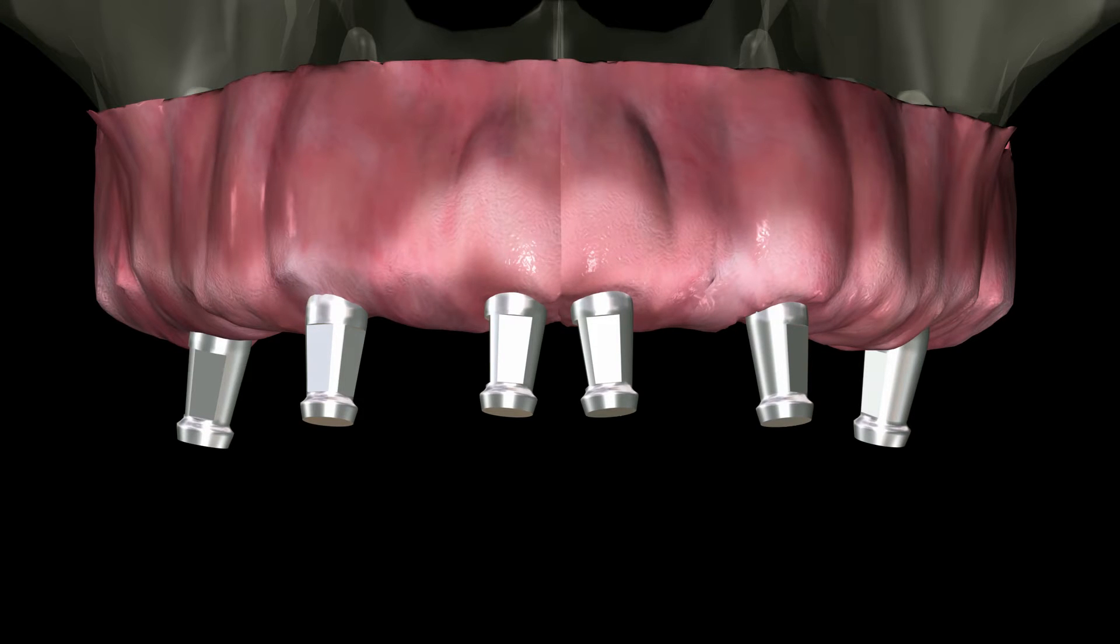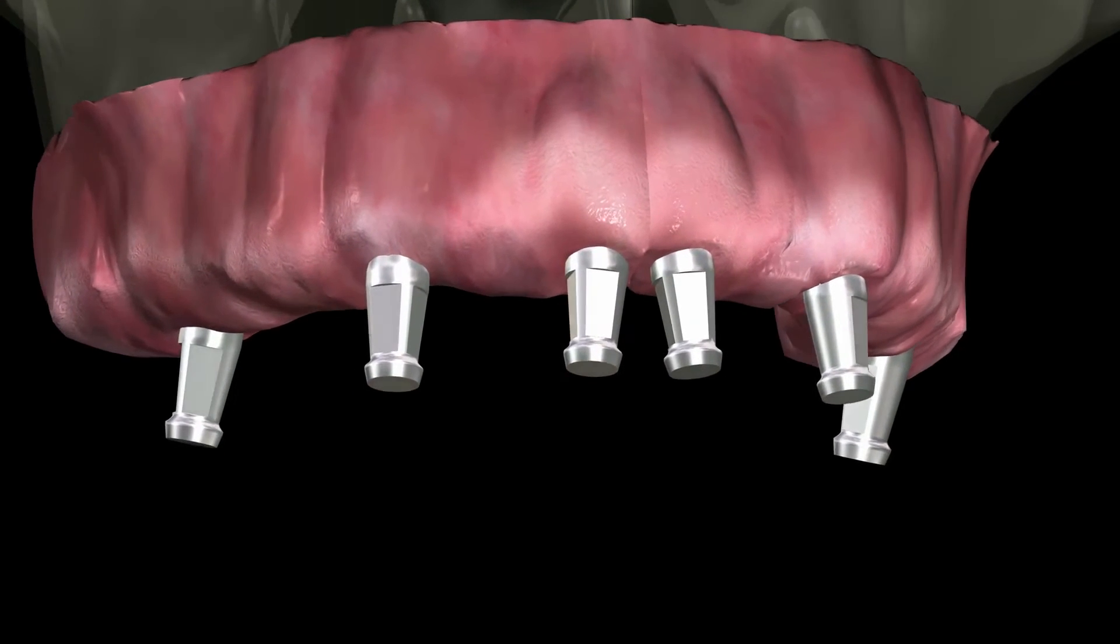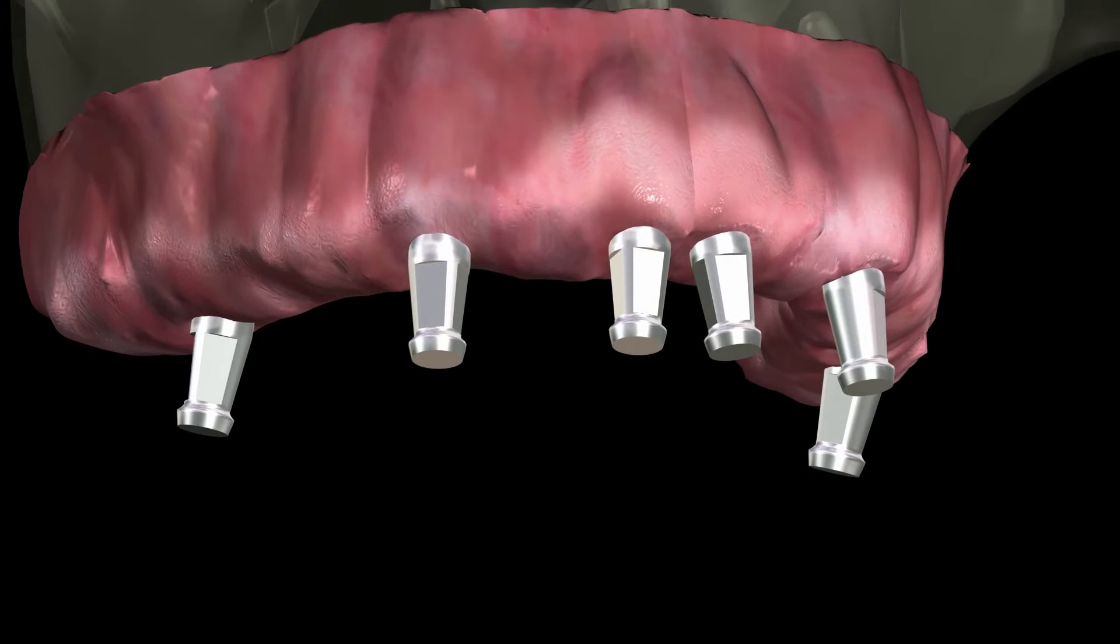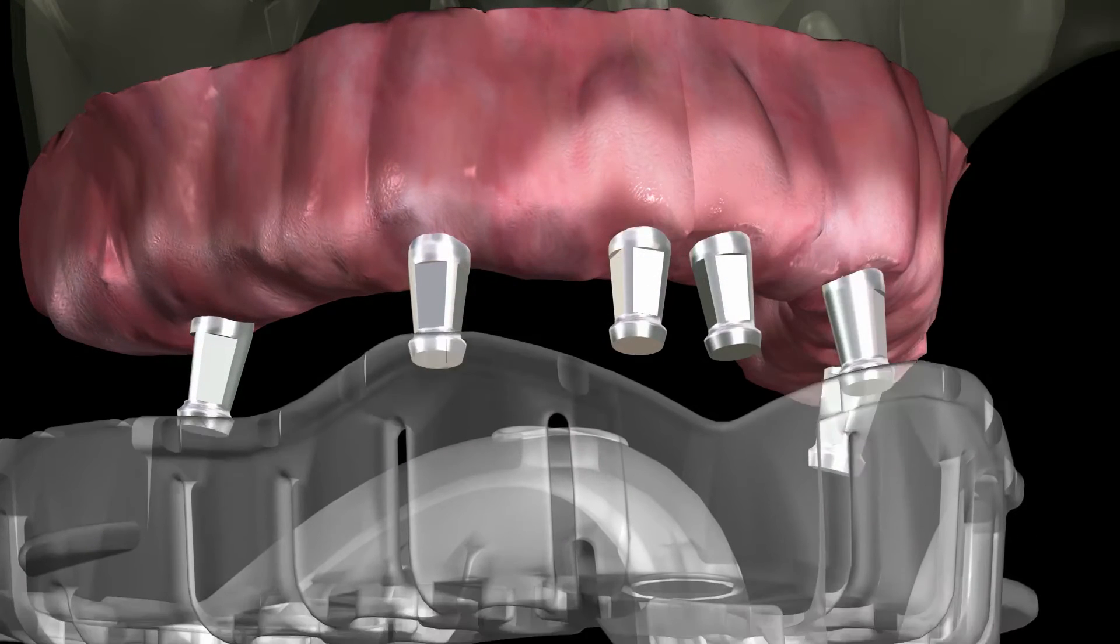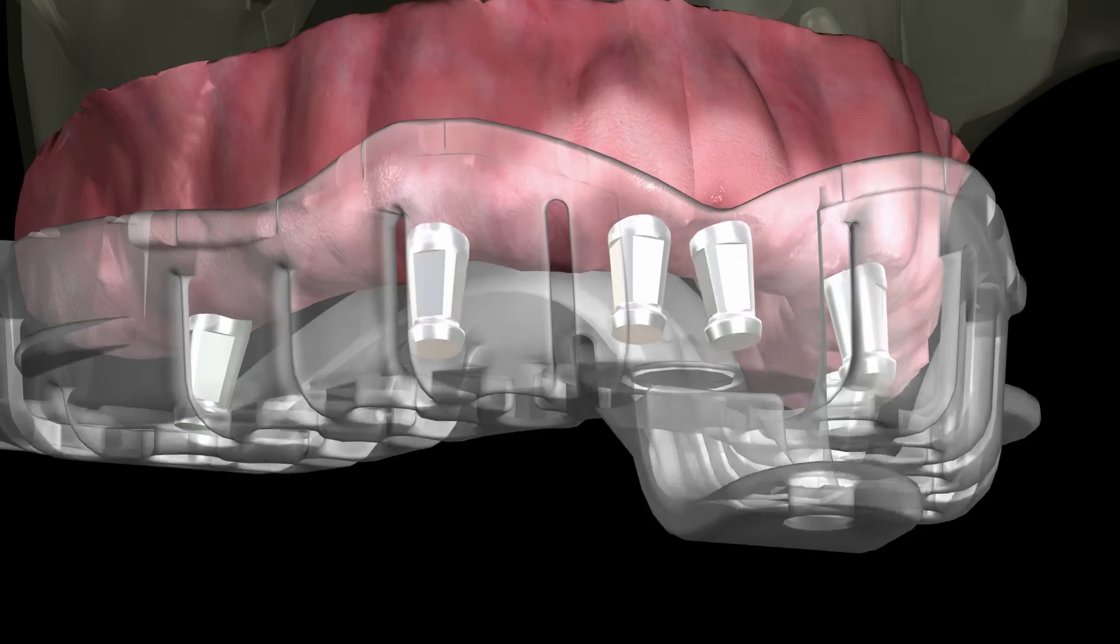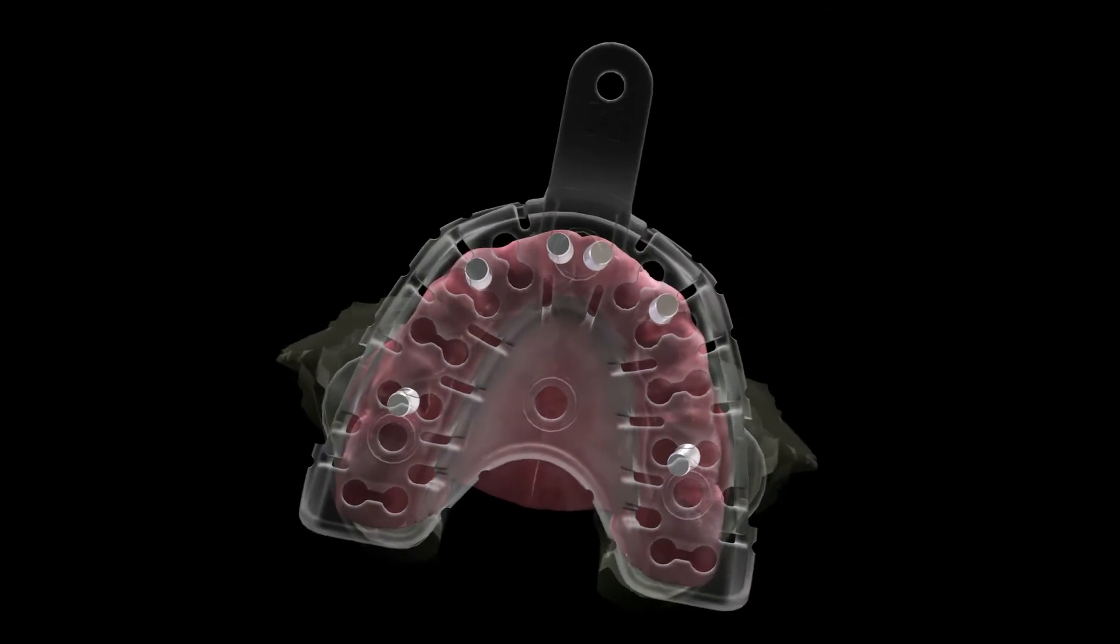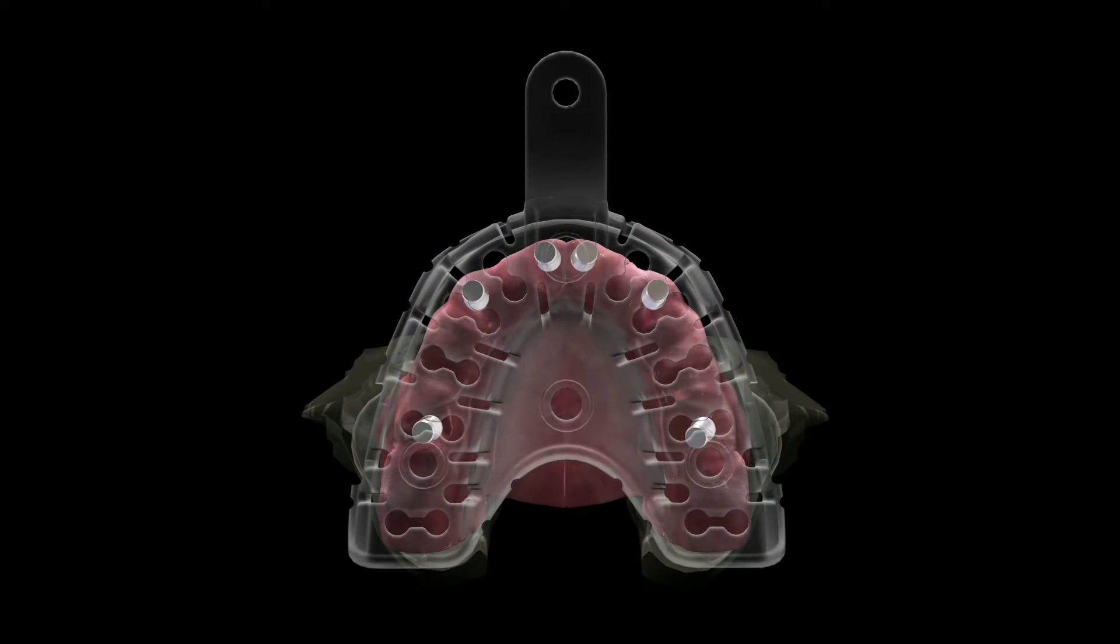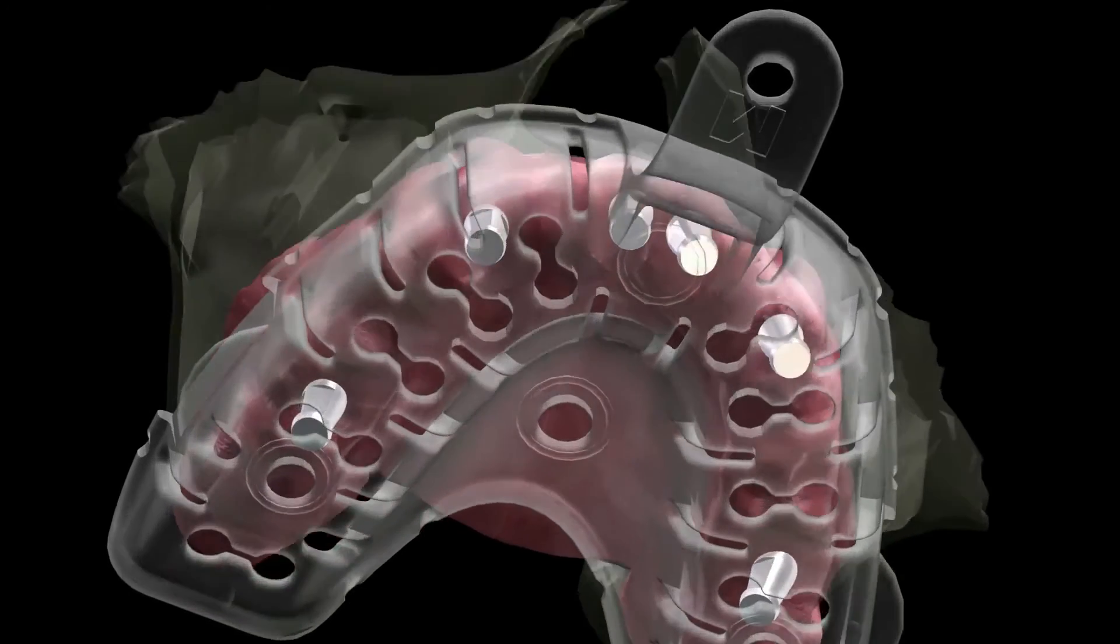Once the impression copings are properly seated, begin to prepare the impression tray. Place an adapted clear implant tray centering the implant impression copings into the tray trough. Observe the implant coping centered in the tray.